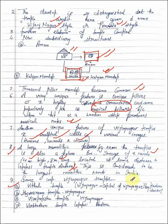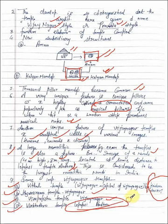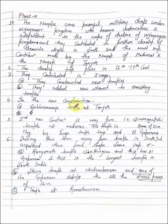Some examples: Vittala temple Vijayanagar, Krishna Devaraya temple, Hazara Ram temple Vijayanagar, Virupaksha temple again Vijayanagar, Veerbhadra temple Lepakshi in Andhra.